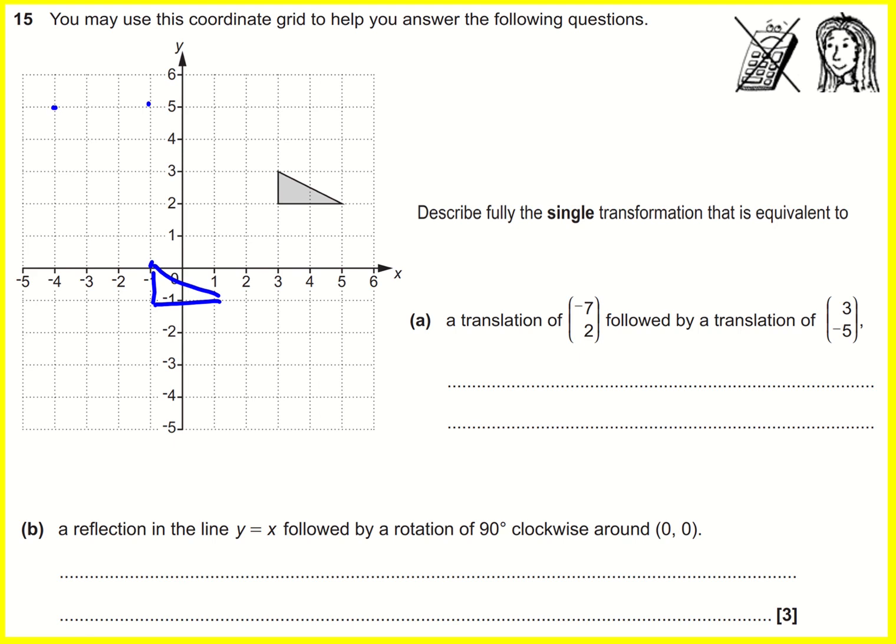And I can see that actually if I take this top left point again, it'd be one, two, three, four to the left, and one, two, three down, so it'd be minus four, minus three.